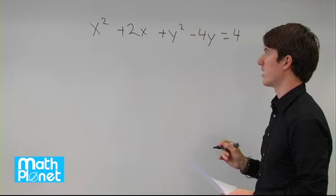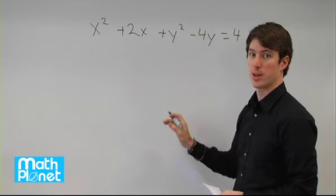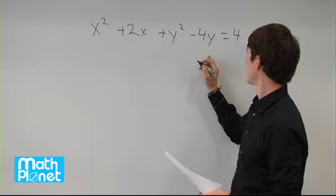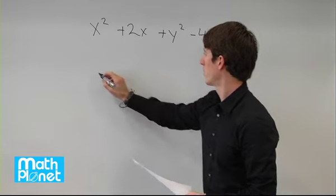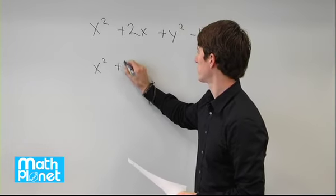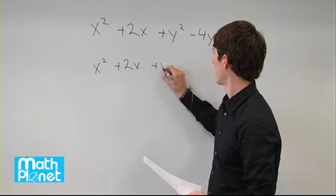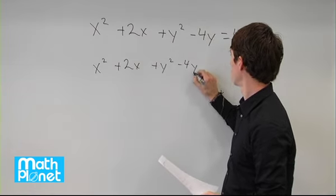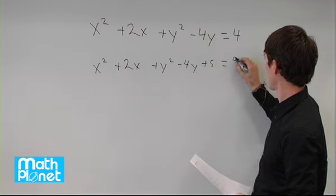Let's try adding 5 and we'll see that we can split that up and make two perfect squares. So if we add 5 to both sides we can write x squared plus 2x plus y squared minus 4y plus 5. Adding 5 to this side gives us 9.